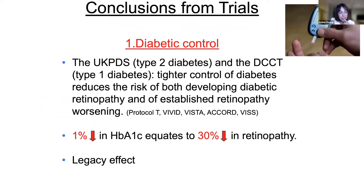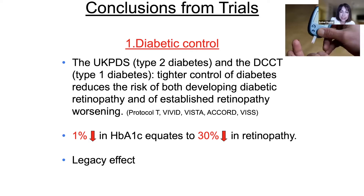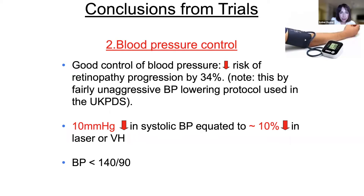For diabetic control: a 1% reduction in HbA1c — the blood test that gives us an average of blood sugars — equates from really good quality trial data to a 30% reduction in retinopathy. There is also a legacy effect, meaning even if somebody has had years of very poor control, when control improves that benefit continues within the blood vessels.